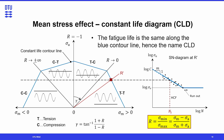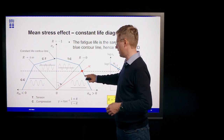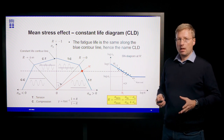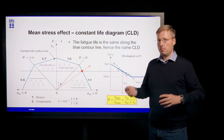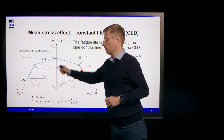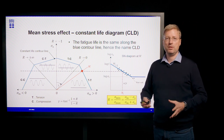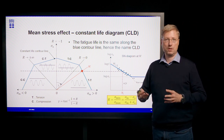Each SN curve is represented along those lines, and once we have obtained them, we can interpolate the points using a so-called constant lifeline — the blue line shown here. The constant lifeline means that every point on that line renders the same fatigue life. If we take many of those contours, those constant lifelines, we form a constant life diagram, which is specific for a given composite material system.